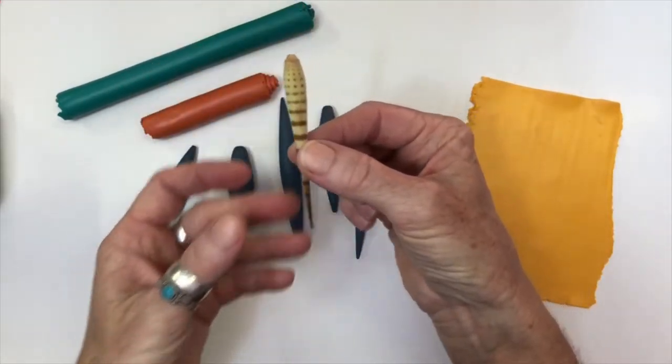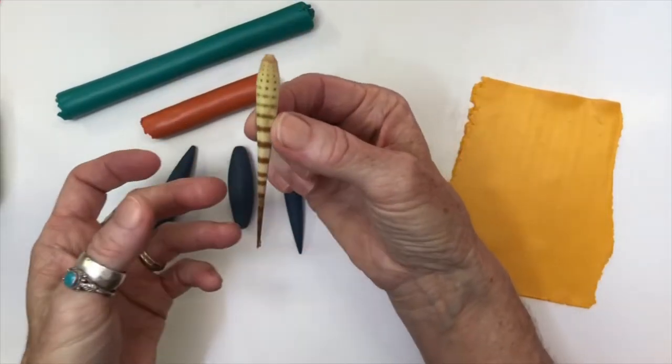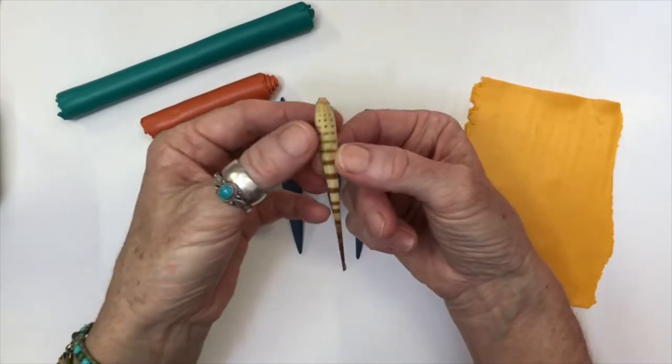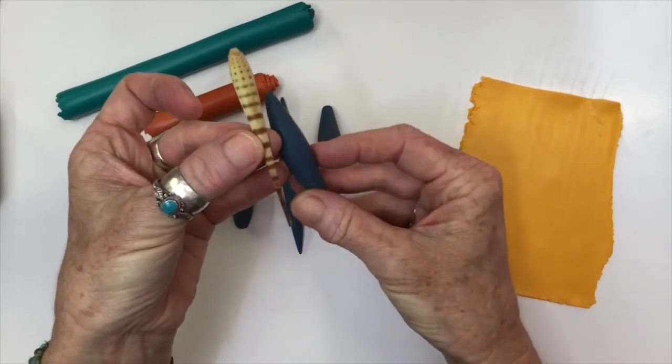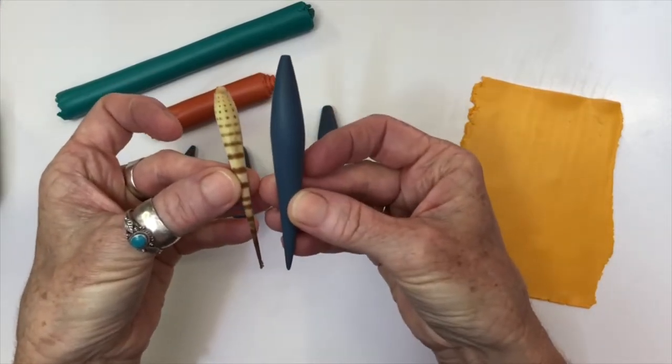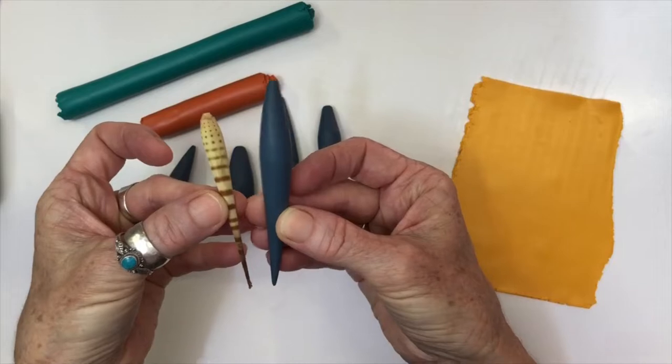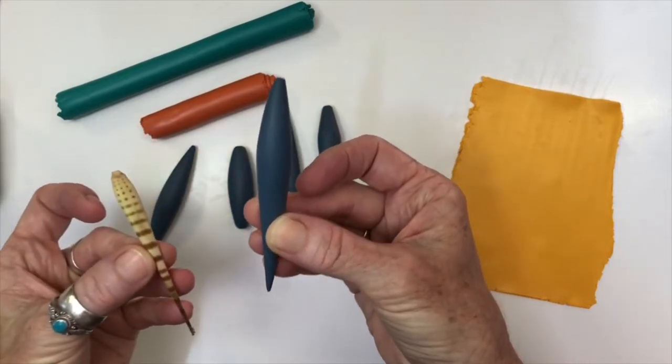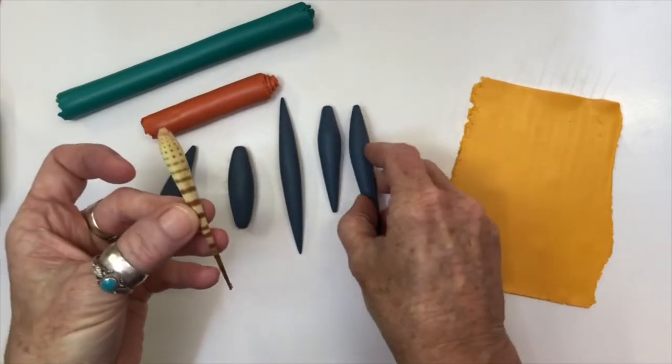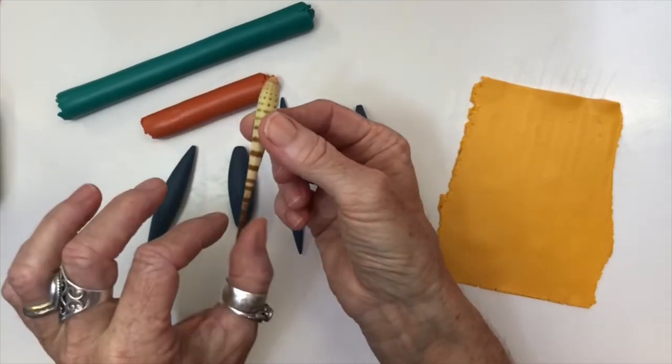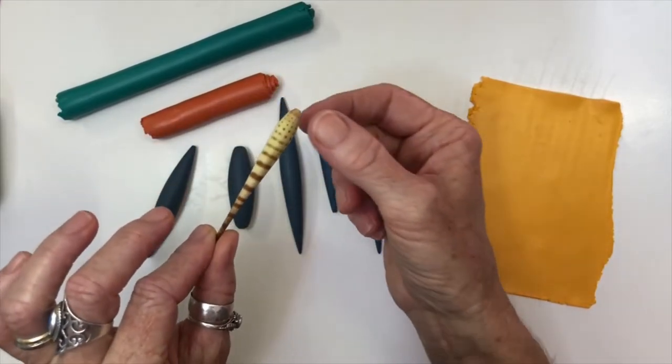I just wanted to show you this little guy because I refer to this as a sea urchin spine, which it is. And this was the inspiration behind some of the shapes that I create. So when I refer to a sea urchin spine shape, that's kind of what I'm talking about. I just wanted to show you that because I have confused some people in the past with that one.